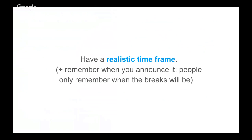Have a realistic timeframe — estimate how long every activity would take and then double that. Also, people being people, they'll only remember when the breaks are going to be. Remember that a design sprint is very heads-down work time — you're working the whole time you're in there. No emails, no laptops, no phones. As a rule, if people have to get on their laptops, they should leave the room. When you announce the agenda, people will really pay attention to when the next opportunity is to get on their laptop. Make sure you have a realistic timeframe, bring the agenda up again and again, and reiterate to people at the beginning and end of each day what's happening and what's happening next.